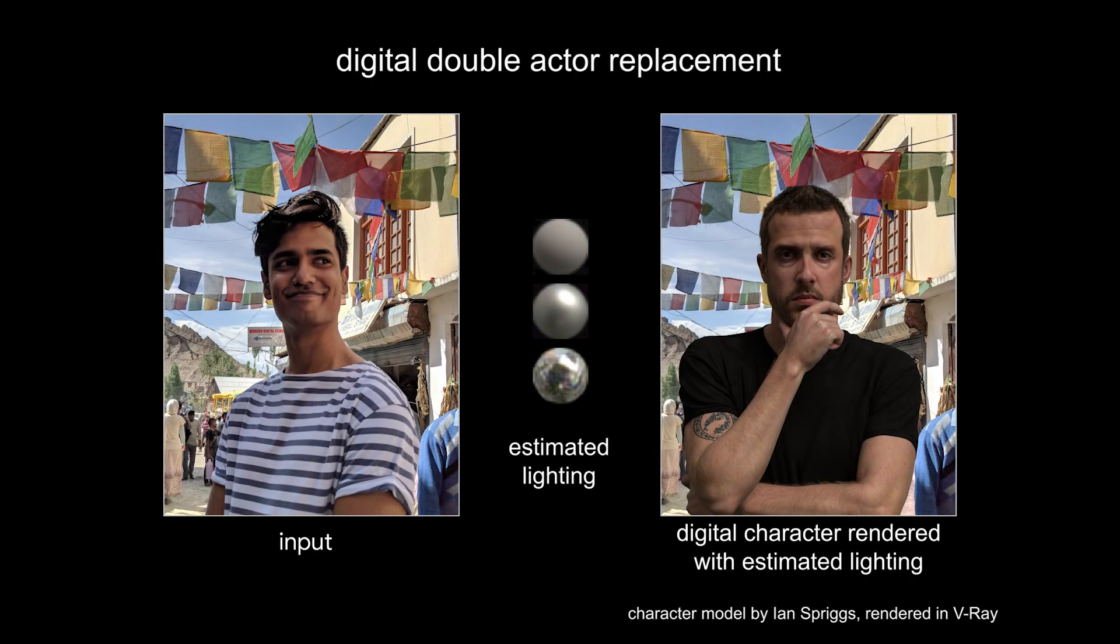We have one more example, with the input, the estimated lighting, and a digital character rendered using the lighting estimate.